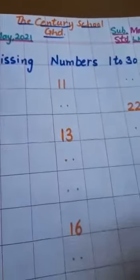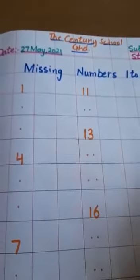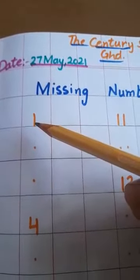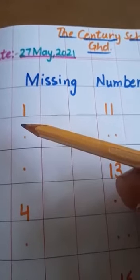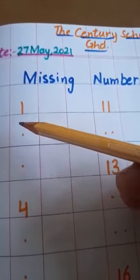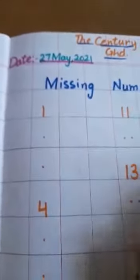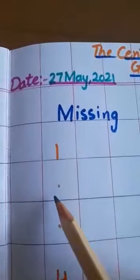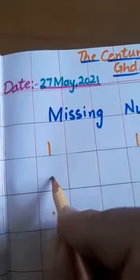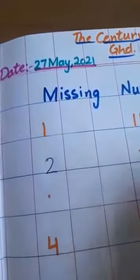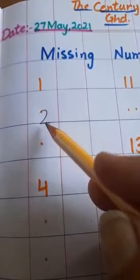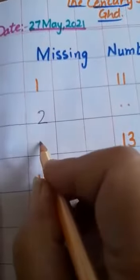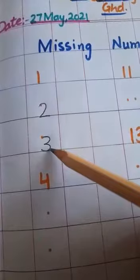Now we will write these numbers. First of all, you have to learn counting for this. Now see — this is 1. When we speak counting, we know what comes after 1. This is 1, and what comes after 1? 2. We will write 2. After 2, what comes after 2? 3. We will write 3. 1, 2, 3.